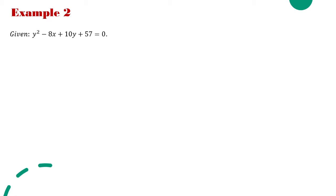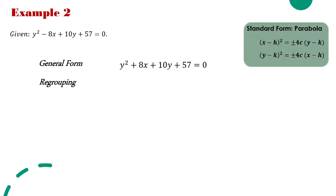For example number 2, we're going to do regrouping. But before that, be mindful that the standard form of the equation of a parabola applies here — this is a parabola because only one variable is squared. In this case, the squared variable is y. Therefore, when we regroup the terms, we place the y variable terms on the left side and the other terms on the right side of the equation.